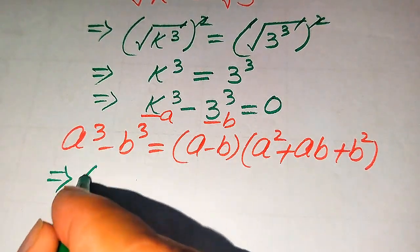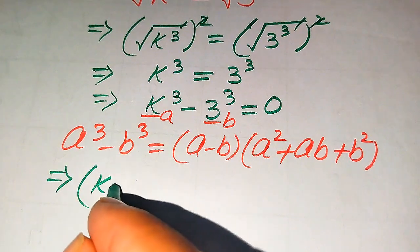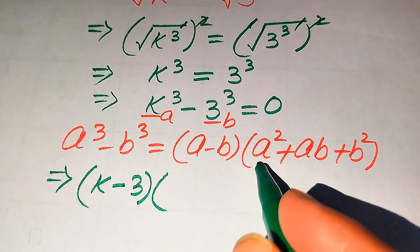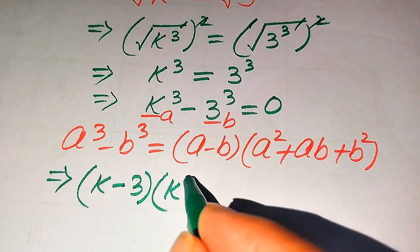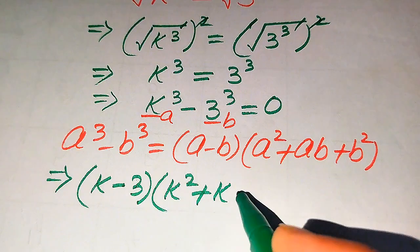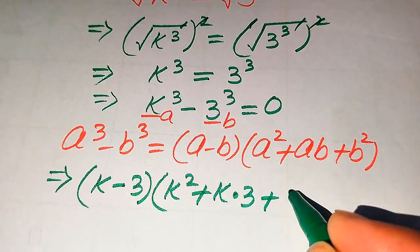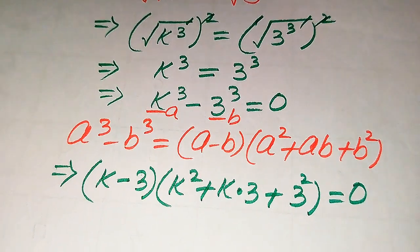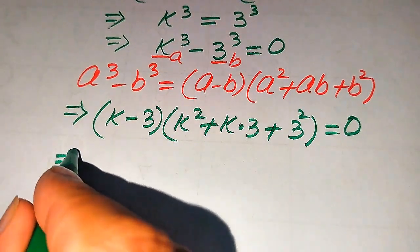Applying the formula to our equation, we write (a minus b) where a is k and b is 3, multiplied by (a squared plus ab plus b squared), giving (k minus 3)(k squared plus k·3 plus 3 squared) equals 0.